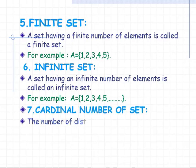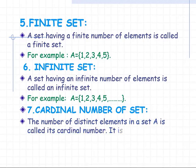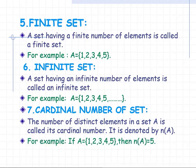Cardinal number of a set: the number of distinct elements in a set A is called its cardinal number, denoted by n(A). For example, if A = {1, 2, 3, 4, 5}, then n(A) = 5.